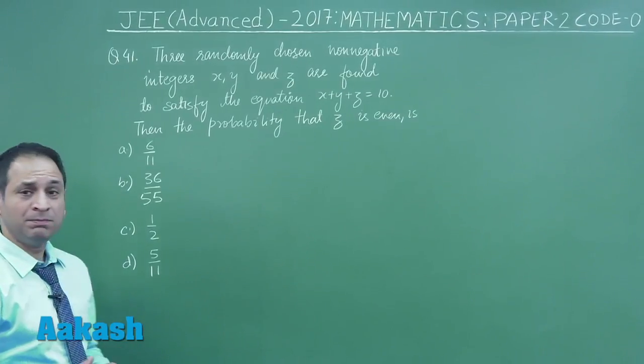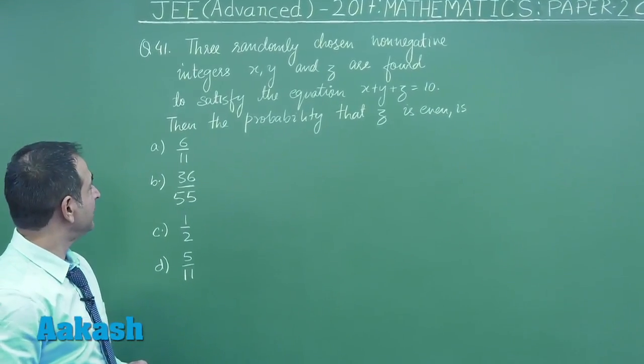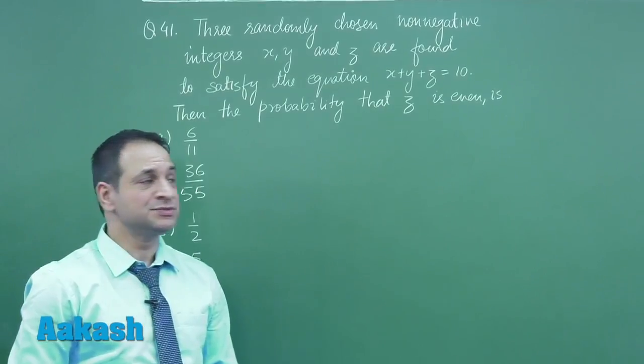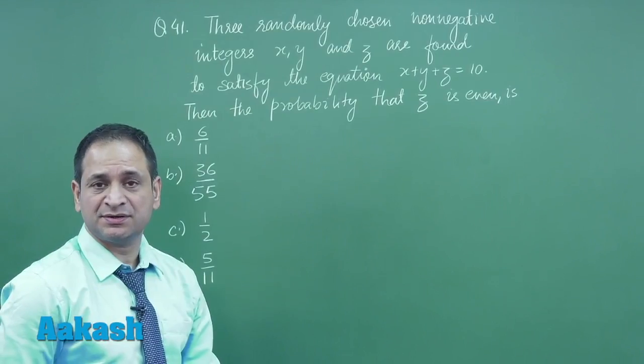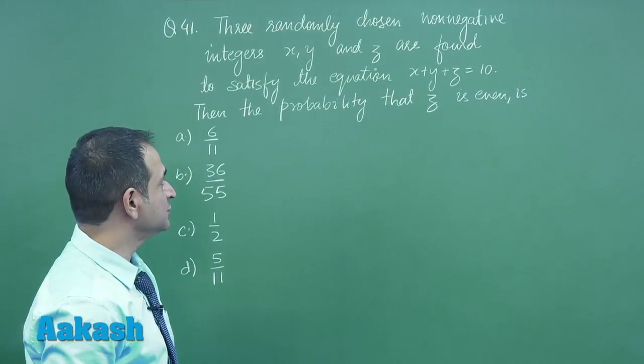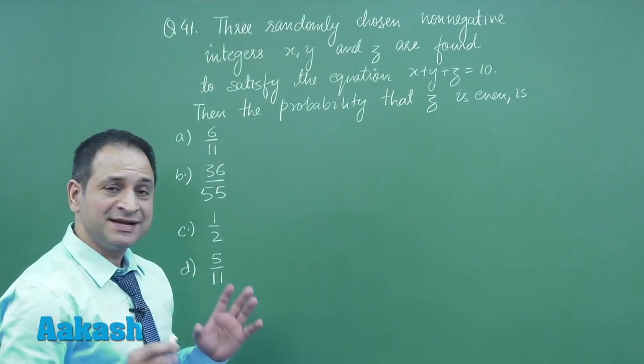Let's go to the next problem, problem number 41. Here what is given: 3 randomly chosen non-negative integers x, y, z are found to satisfy the equation x plus y plus z is equal to 10. Then the probability that z is even.